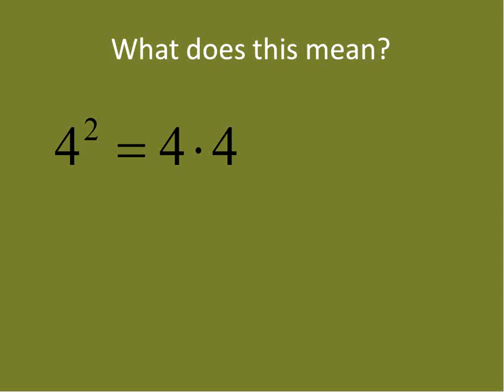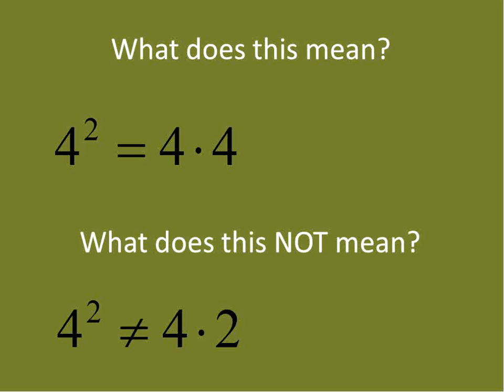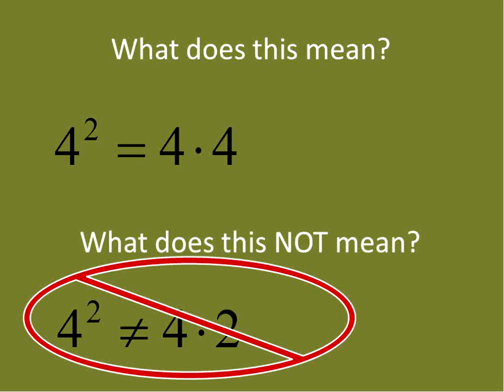4 times 4 is 16, but the point is that we're multiplying the base times itself. The biggest mistake people make with exponents is to multiply 4 times 2 — that is not what this means. 4 to the power of 2 is 4 times itself 2 times. It is not 4 times 2. Do not multiply the base times the exponent.